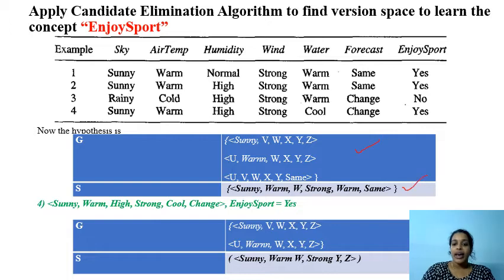We got the fourth rainy instance which is a positive instance. Now just check which are consistent with this positive instance. Sunny, V, W, X, Y, Z. We cannot accept this. It's not consistent.